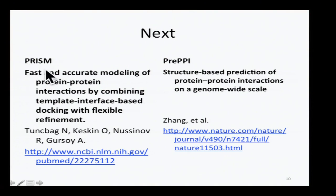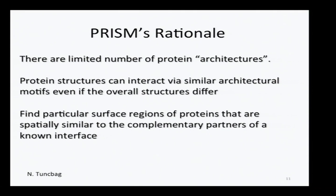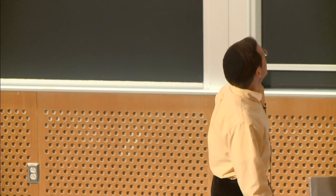We're going to look at two papers describing algorithms for this problem — both uploaded to the website. The first is called PRISM, which uses structural calculations. Then we'll look at pre-PPI, which deals with everything purely without explicitly calculating structures. PRISM is based on the notion that there are a limited number of architectures for protein interactions. If we can identify those architectures, we can figure out whether a protein is a potential partner before doing detailed, costly calculations. Not all amino acids contribute equally — some contribute more to the energy than others, and identifying those critical residues lets us focus computational effort.